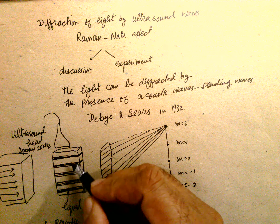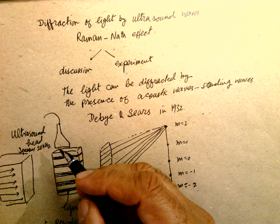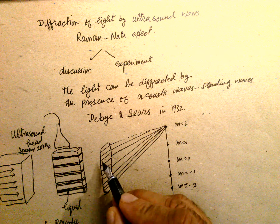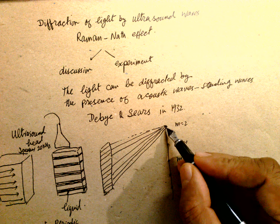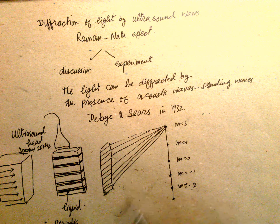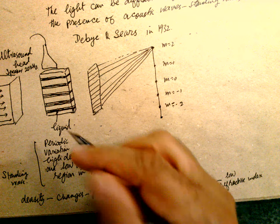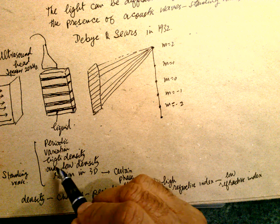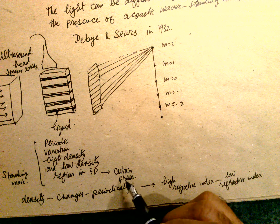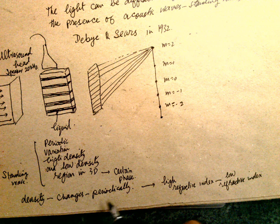A liquid is subjected to ultrasonic waves, and the resulting waves are observed on a screen. The setup acts like a grating. Because of the ultrasonic waves, the liquid develops a periodic variation of high-density and low-density regions in 3D space. At a certain phase, this creates standing waves, and the density changes periodically.